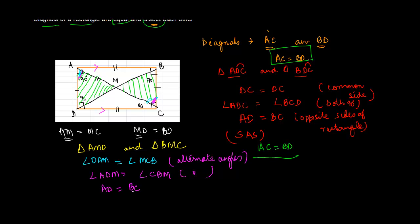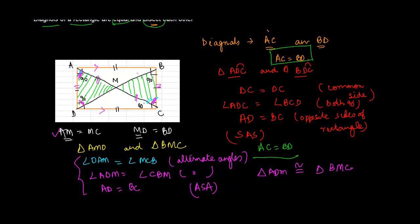Similarly, angle ADM is equal to angle CBM — again alternate angles. And AD is equal to BC because these are opposite sides of the rectangle. Applying the Angle-Side-Angle criterion, triangle ADM is congruent to triangle BMC. Therefore, the corresponding sides are equal: AM equals MC and BM equals MD.